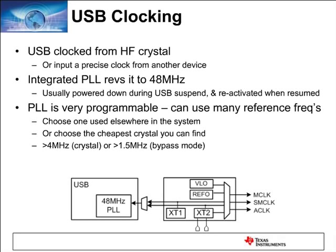The integrated PLL takes the crystal frequency and ramps it up to the required 48 MHz for the USB protocol. A high-frequency crystal is needed rather than the integrated DCO because USB operation requires an extremely high-accuracy clock. The PLL is configured so that in suspend mode it is powered down and reactivated when resumed, keeping power consumption within limits during suspend mode.